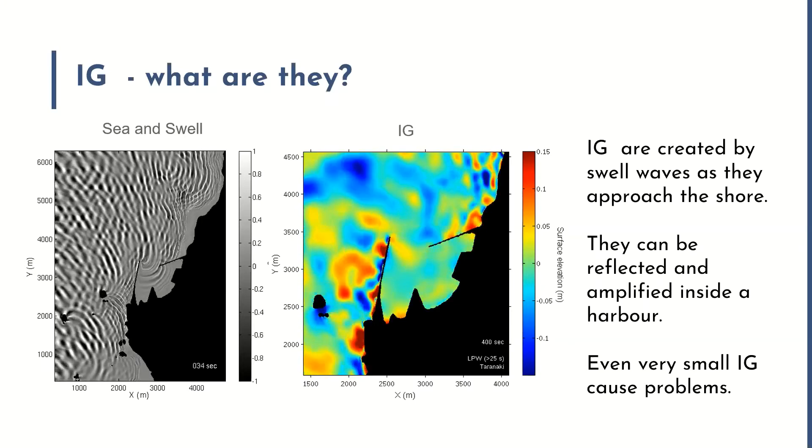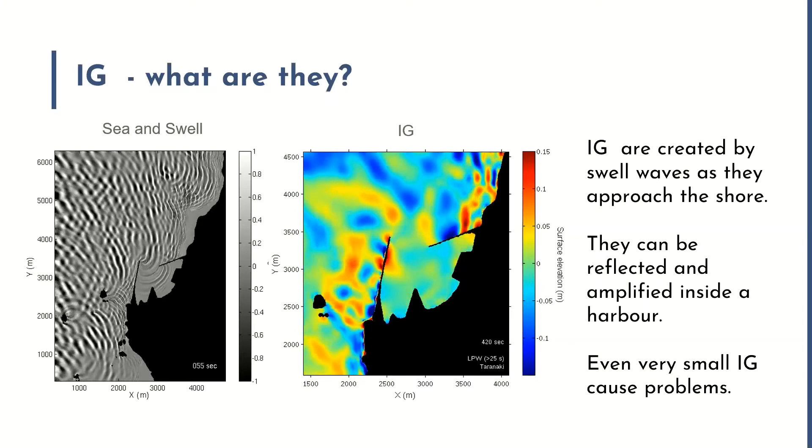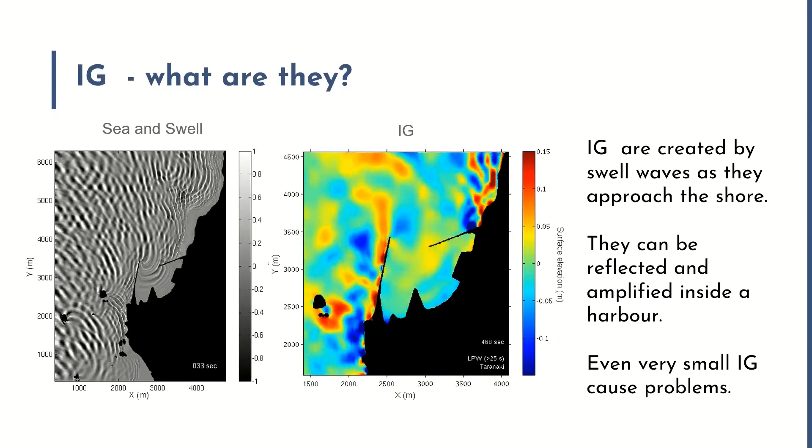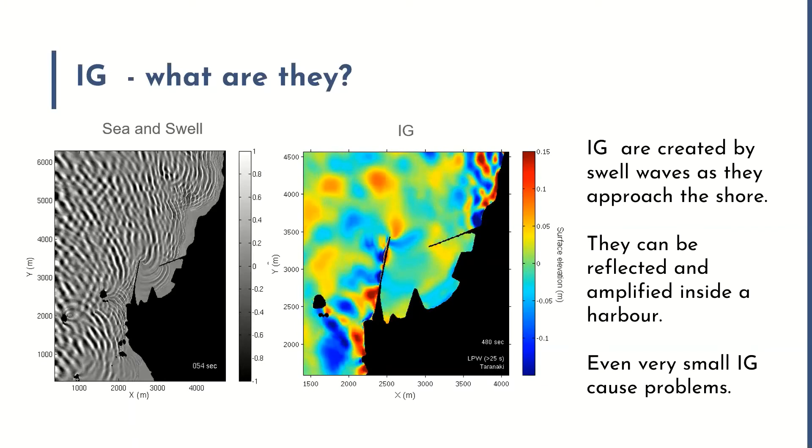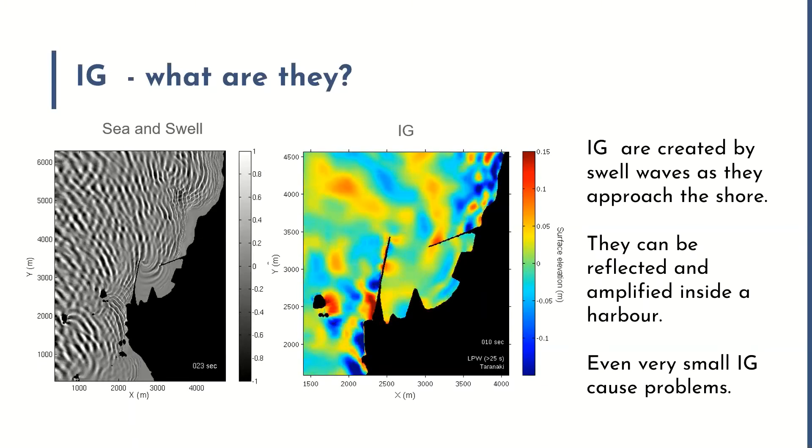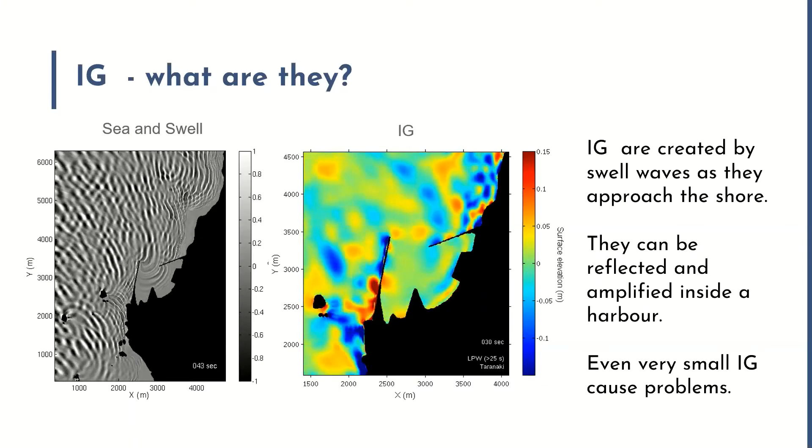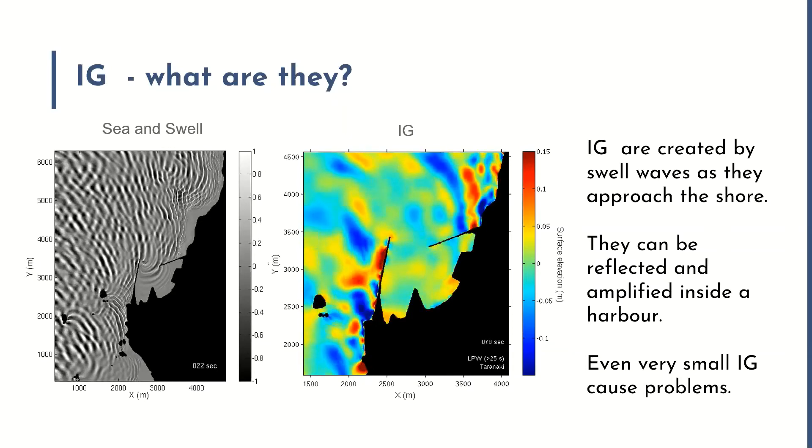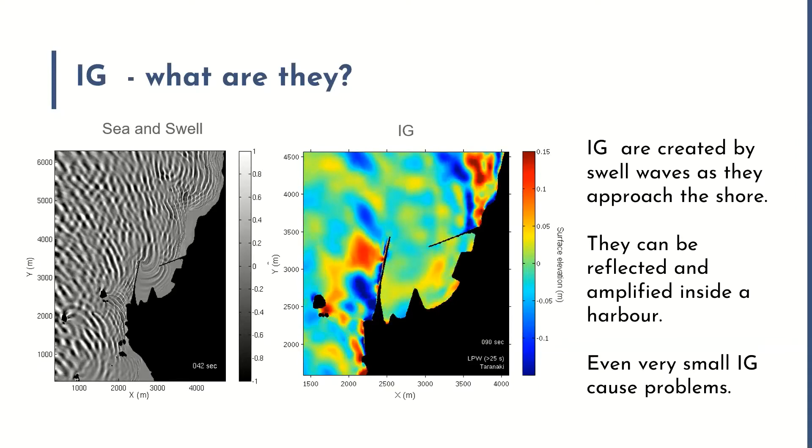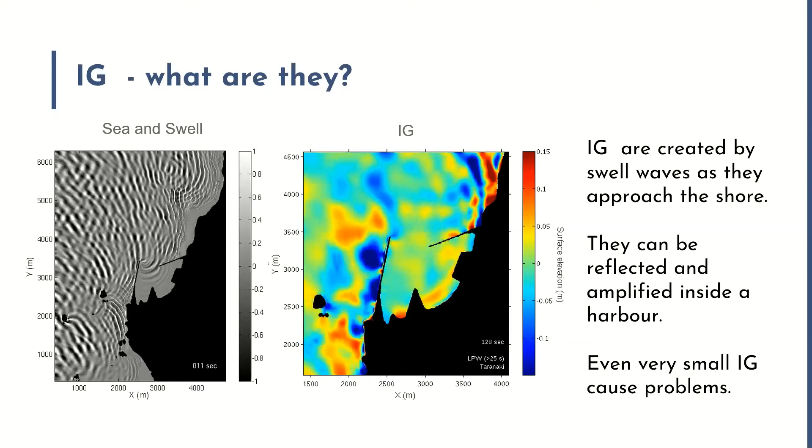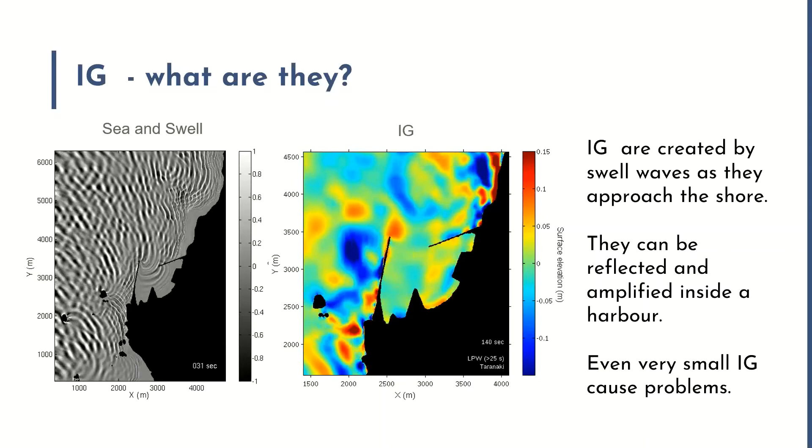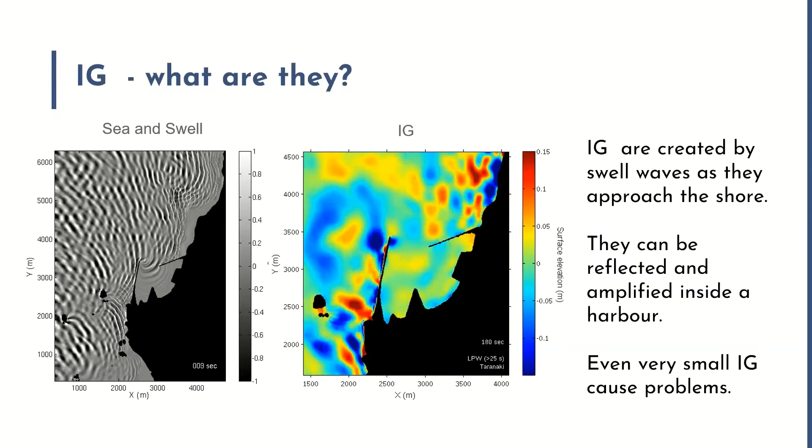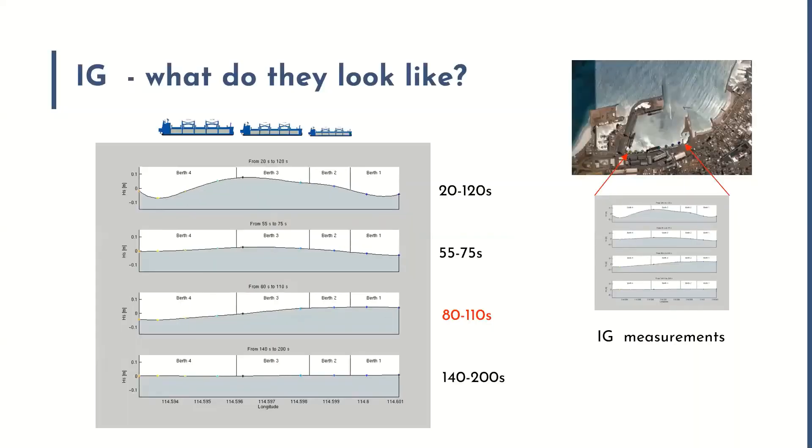Looking at this particular image here, on the left-hand side we've got the typical sea and swell waves entering a port and on the right-hand side is the infragravity wave field that is underneath that same gravity wave field. You can see that the infragravity waves tend to slosh around inside the harbor. They're not very coherent. They're not like a nice smooth waveform. There's an awful lot of reflections and confusion going on. What we do know is that very small infragravity waves can cause problems to ships.